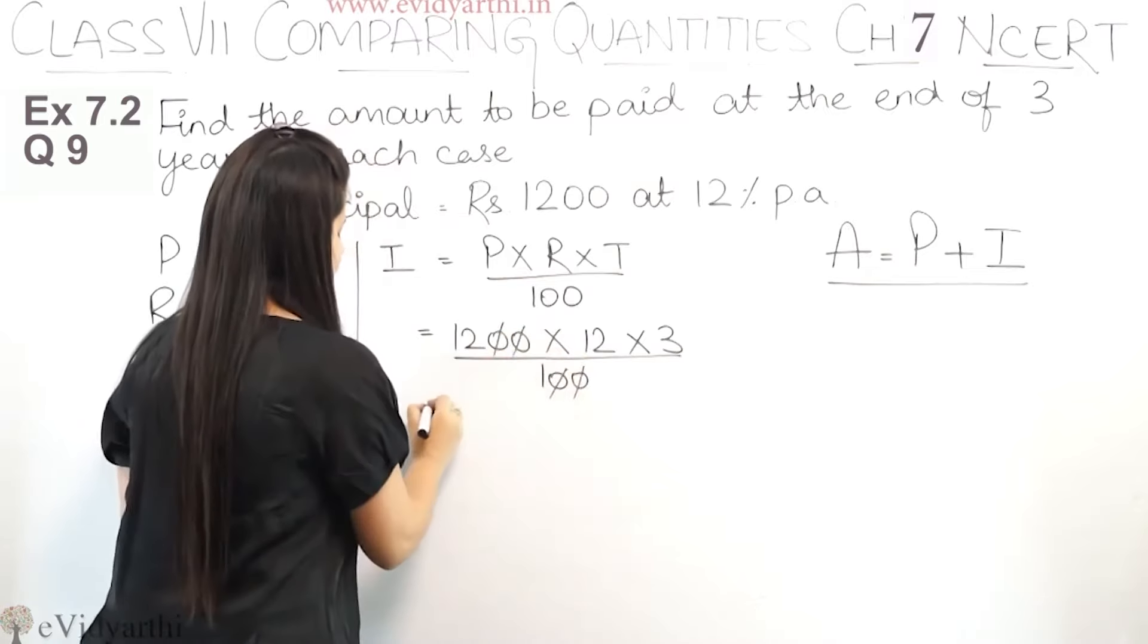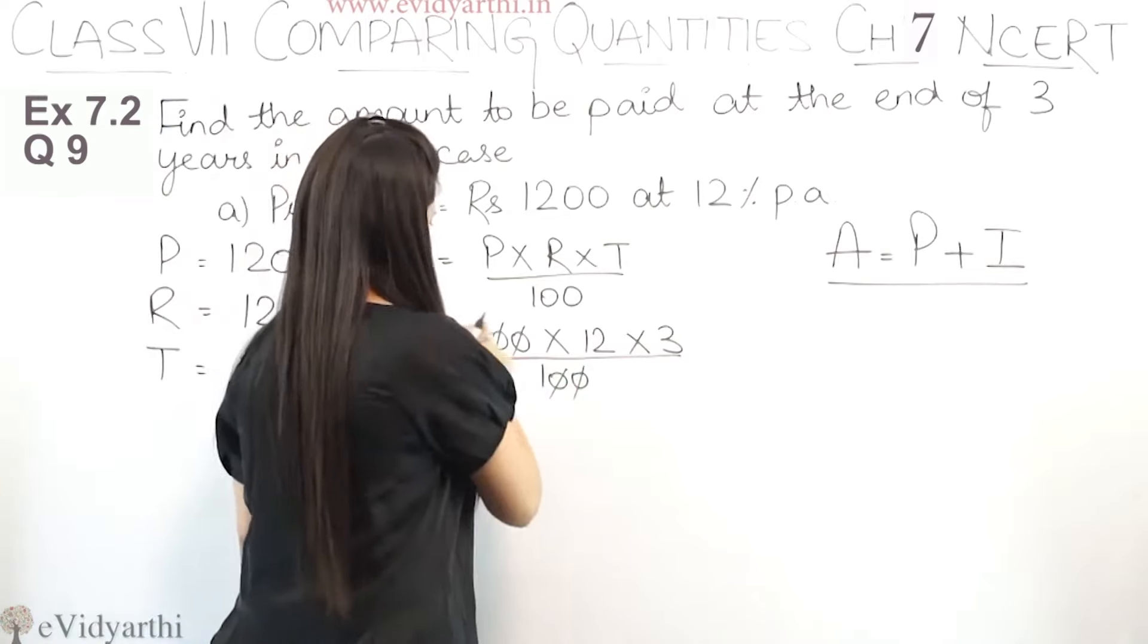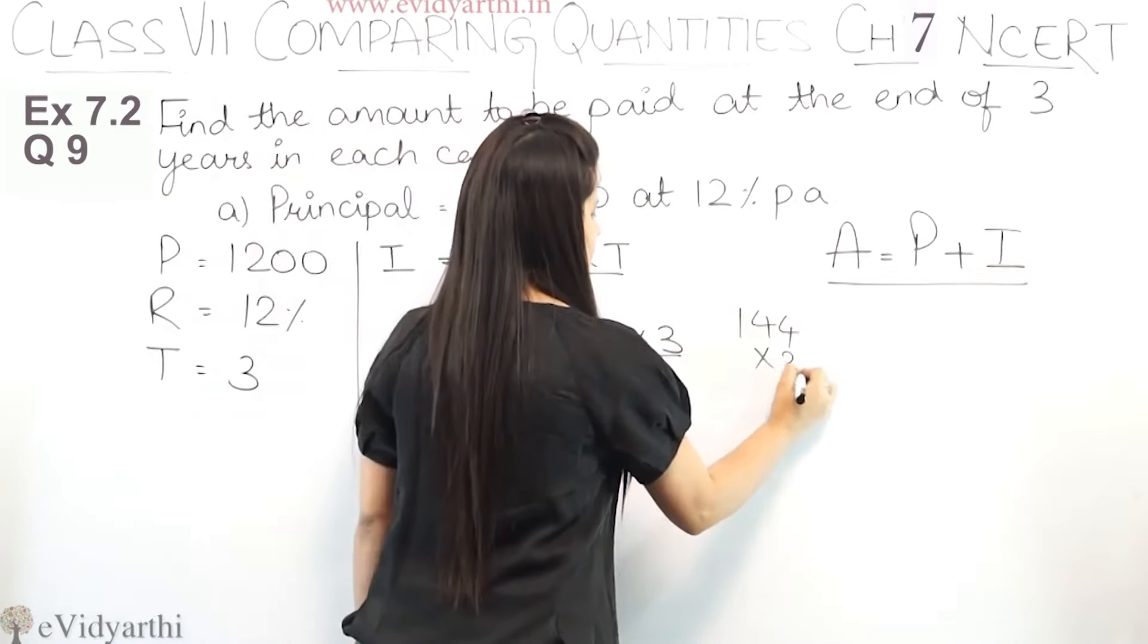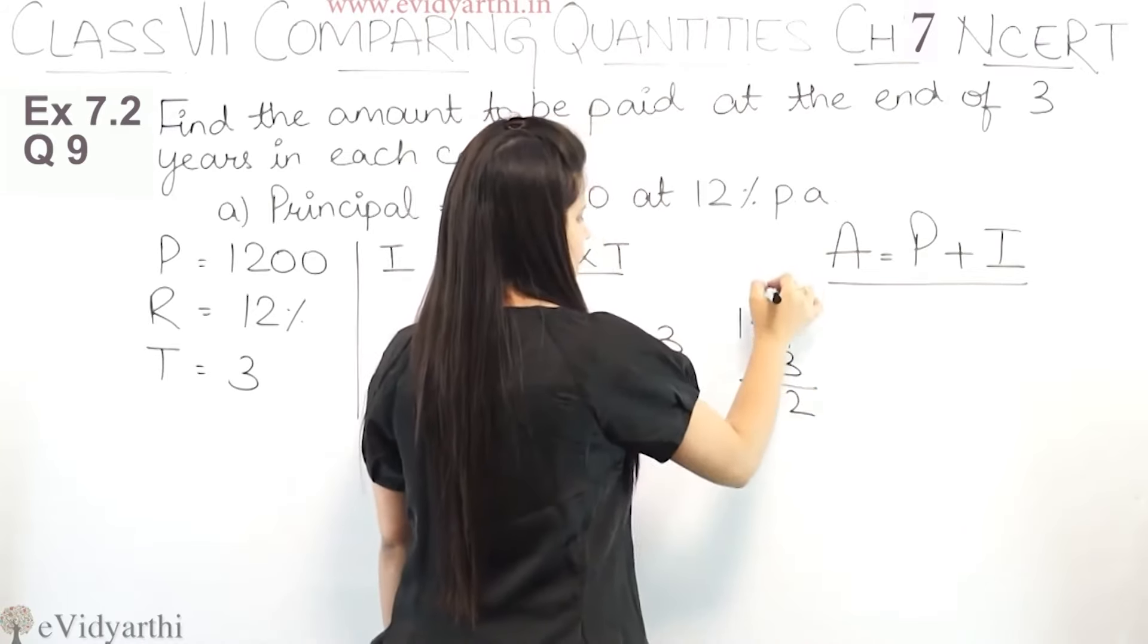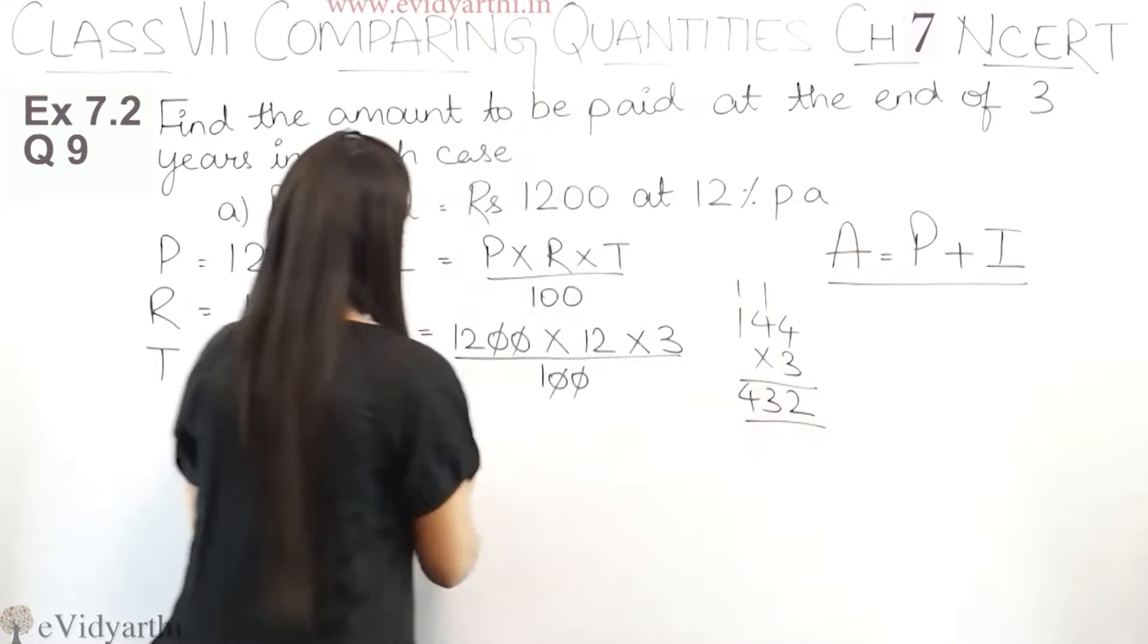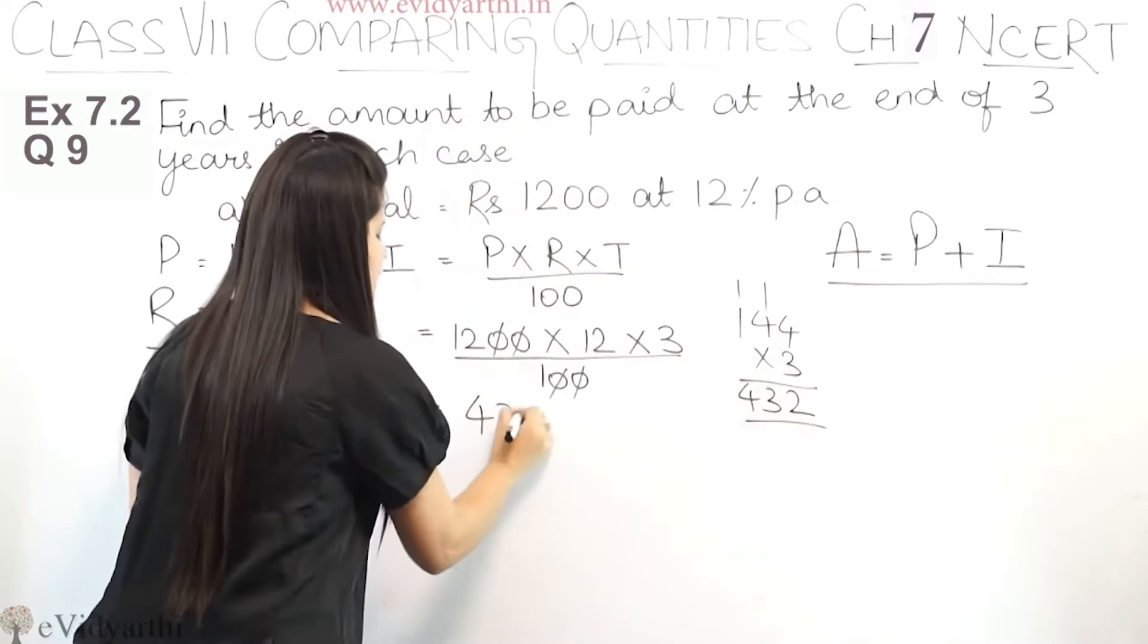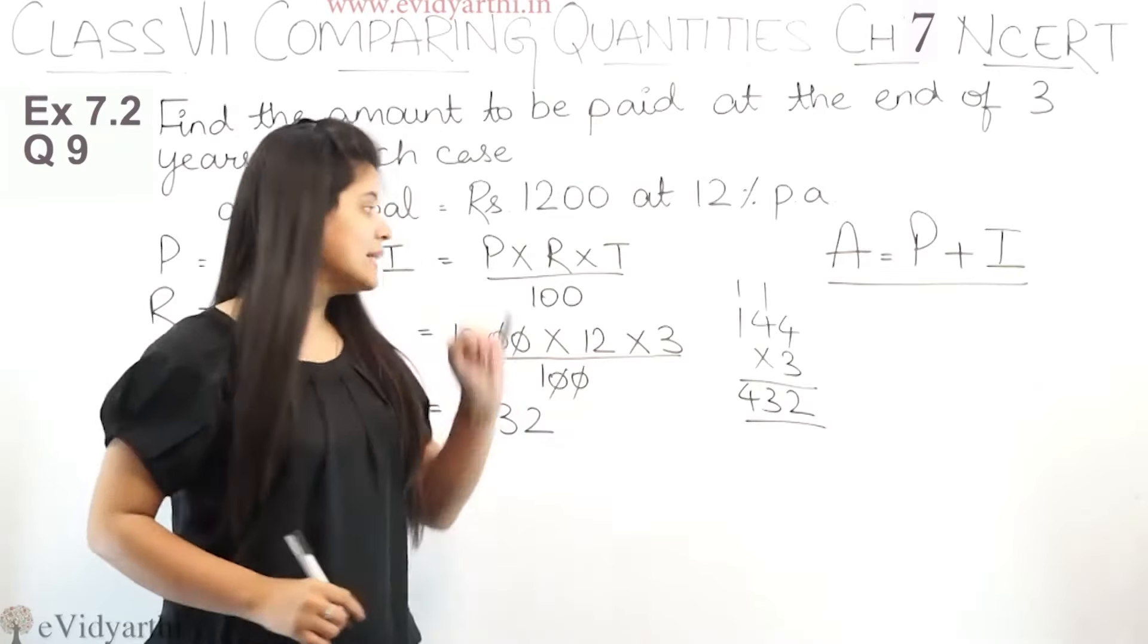So now principal is 1200, multiply by rate which is 12, and time is 3, upon 100. Now the zeros cancel out. Now you just have to multiply this. So 12 into 12 is 144, multiply by 3. So 4 times 3 is 12, plus 1 is 13, 3 times 1 is 3, plus 1 is 4. So this is 432.